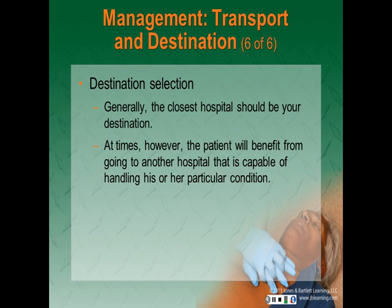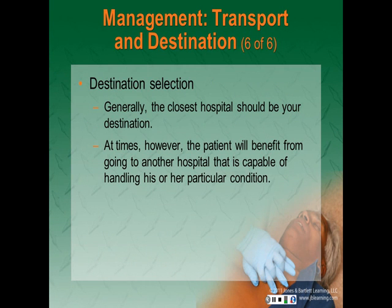Destination selection: generally, the closest hospital should always be your destination. However, there are times a patient will benefit from going to another hospital capable of handling their specific condition. Some types of reasons we would do this include a trauma center, a burn center, a stroke center, or a cardiac cath lab.